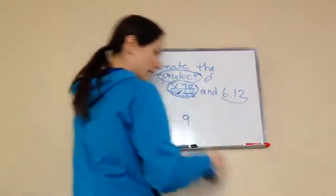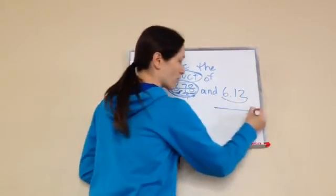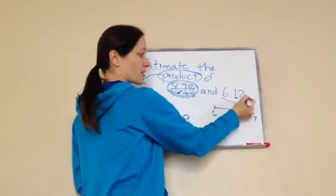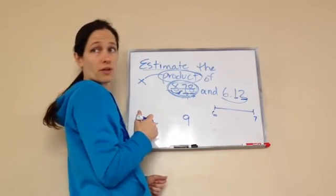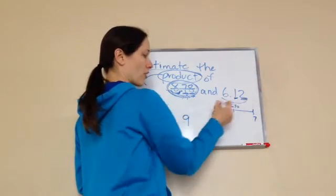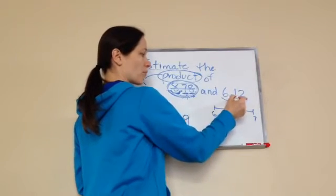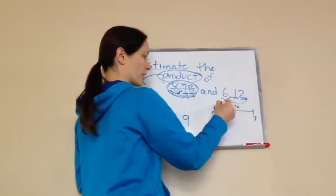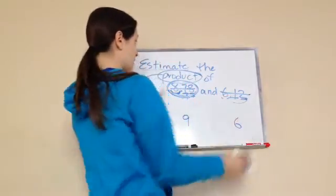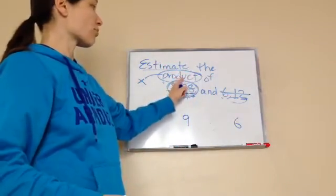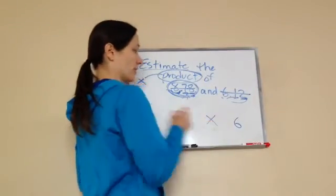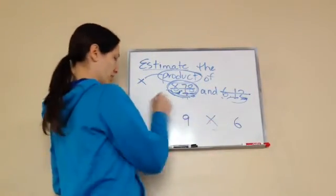Now let's go to our next number: 6.12. Between which two numbers is 6.12? It's between 6 and 7. And again, tenths and hundredths — so the midpoint would be 6.50, and 6.12 is probably closer to 6. So we have the numbers 9 and 6. We've estimated, now let's find the product of 9 and 6. We multiply them, and that would be 54. Very good — 54 is the answer.